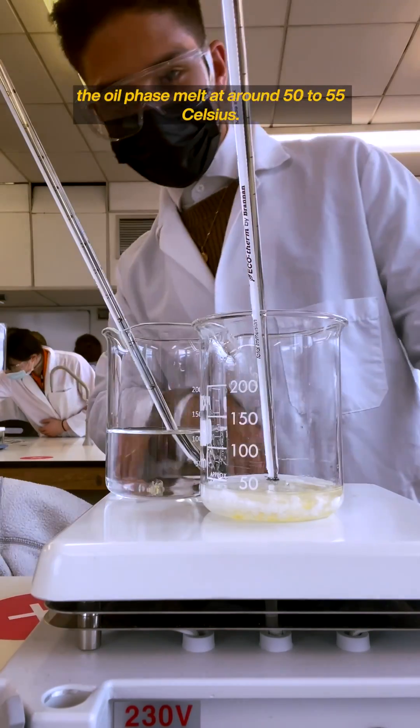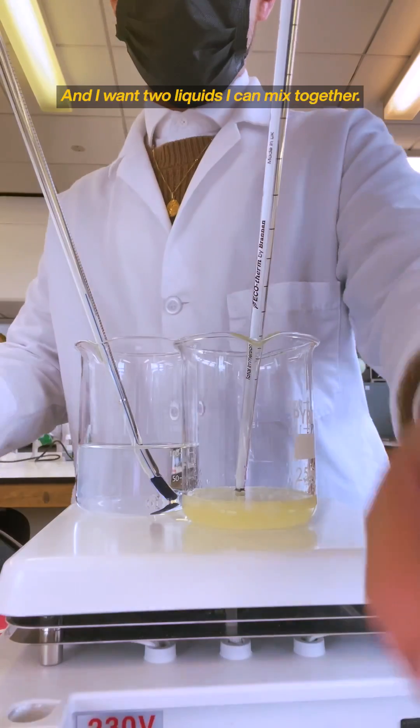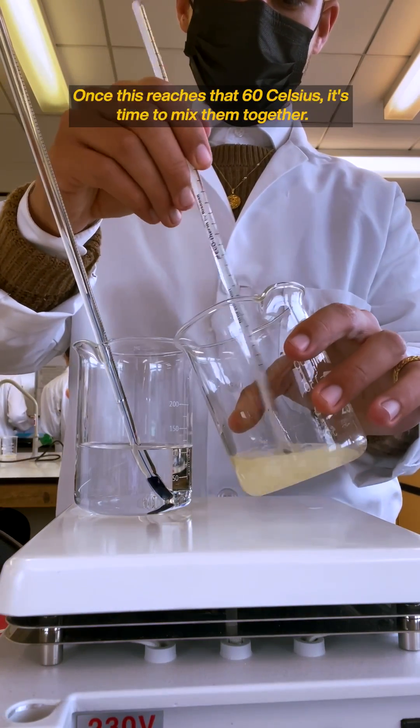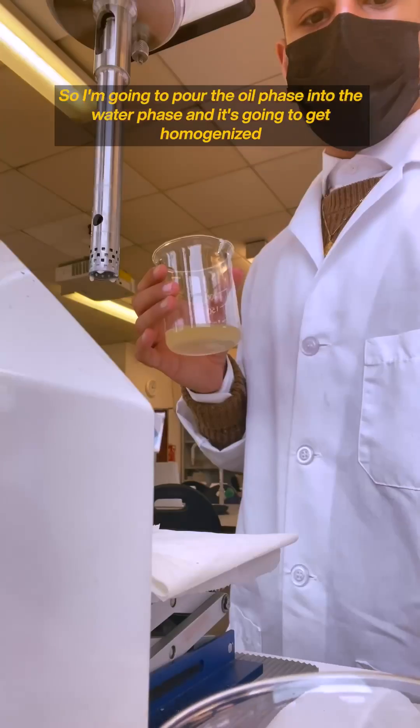...melt at around 50 to 55 Celsius, and I want two liquids I can mix together. I don't want any solids. Once this reaches 60 Celsius, it's time to mix them together, so I'm going to pour the oil phase into the water phase.